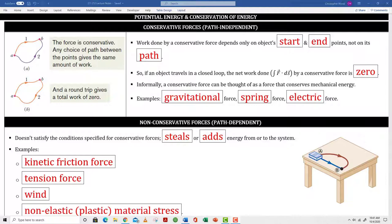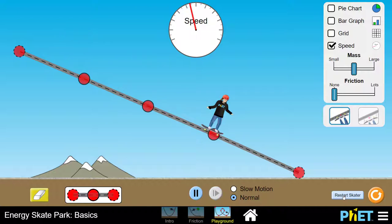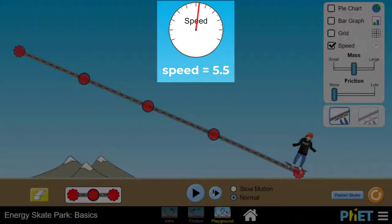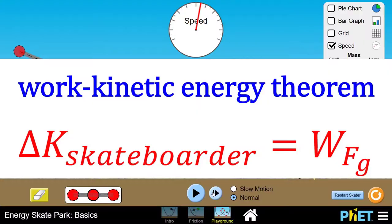And next, let's look at the example of the gravitational force. Look at this person skating down a ramp. The gravitational force is a conservative force. The work done by gravity does not depend on path. It only depends on the starting height and the ending height of the skater. The speed of the skater at the end of the ramp is about 5.5 units. Remember the work kinetic energy theorem. The change in the skater's kinetic energy equals the work done on that skater by the gravitational force.